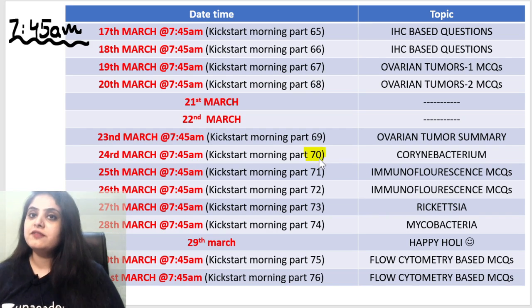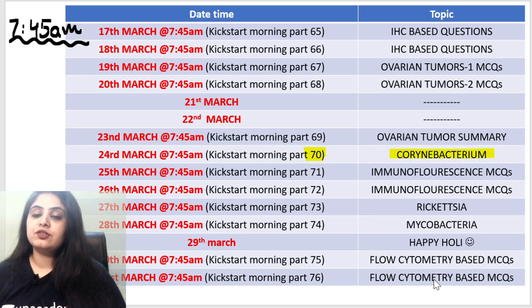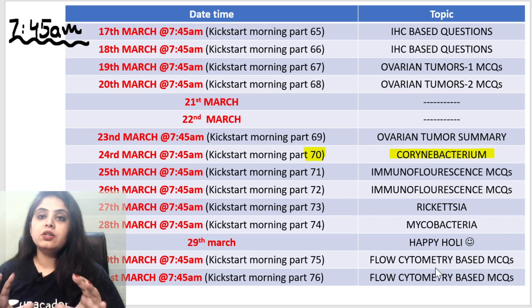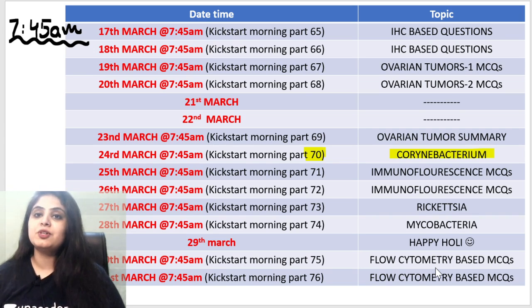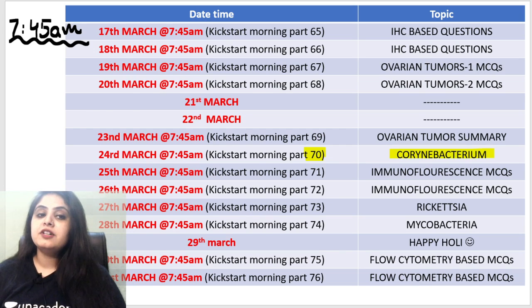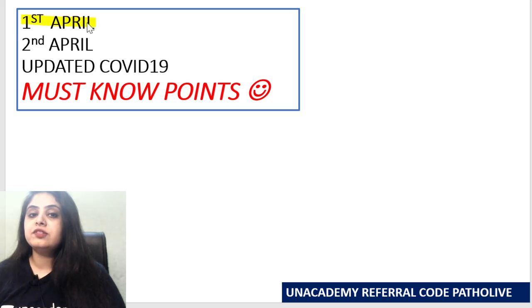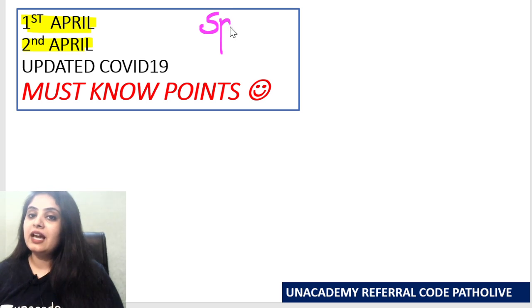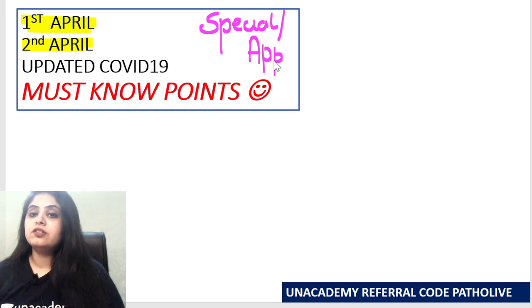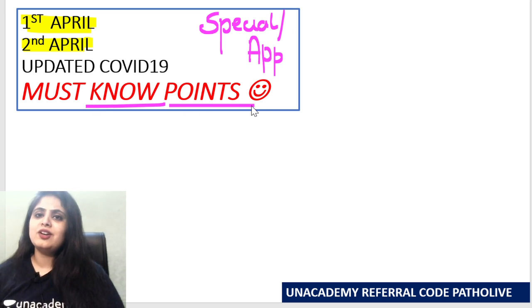The topic for tomorrow is Corynebacterium, and you can see the rest of the topics also — every day we go topic-wise and discuss important MCQs, image and mnemonic of the day pertinent to that. On 1st and 2nd of April, the most awaited class will be a free special class on the Unacademy app on COVID — not rumors, but the most high-yielding information for your exam.